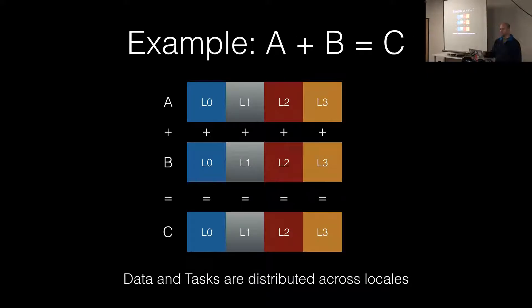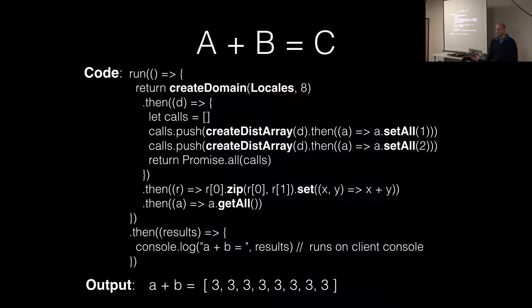One of the main interesting examples from Chapel is how you do A plus B equals C across a large cluster. Say you have four locales and distributed memory — you break up your vector across each locale, where each color represents its own locale. You want to do addition across all of these so that the final result is C. The code for this looks a bit more complicated: you create a domain which tells you how to distribute your memory, you create A and B, then you do the zip to create C, and then you print out the result, which is all threes.